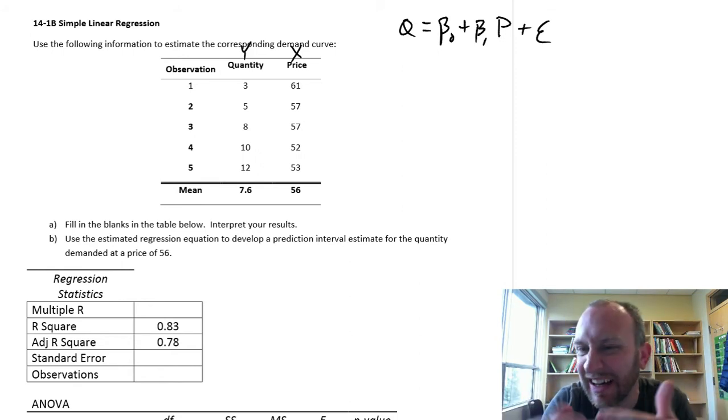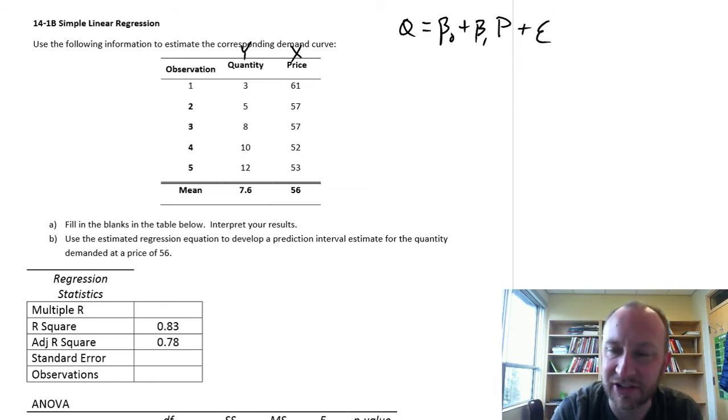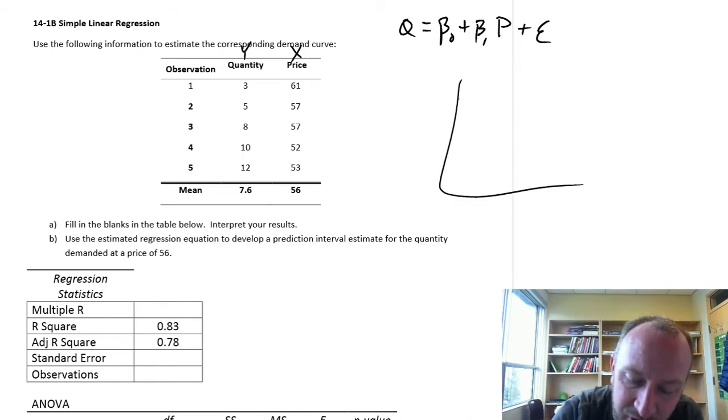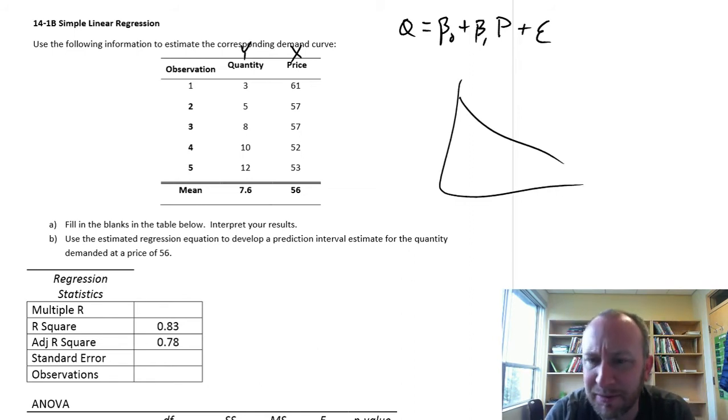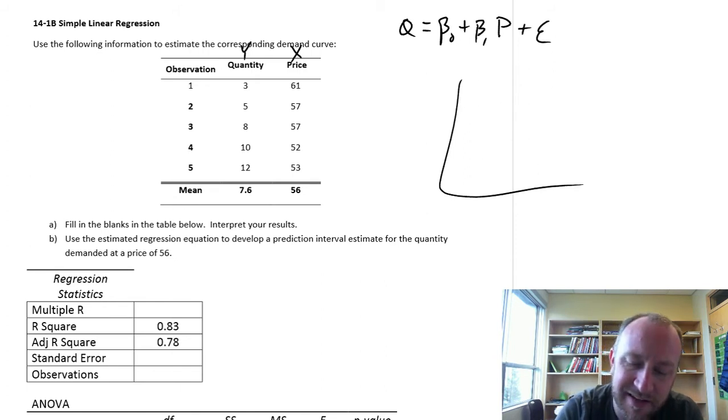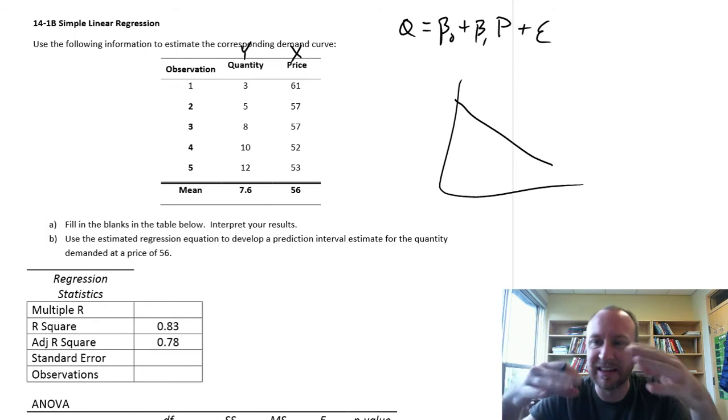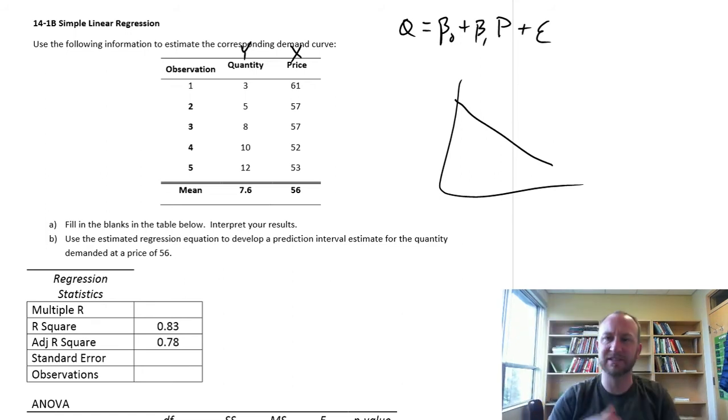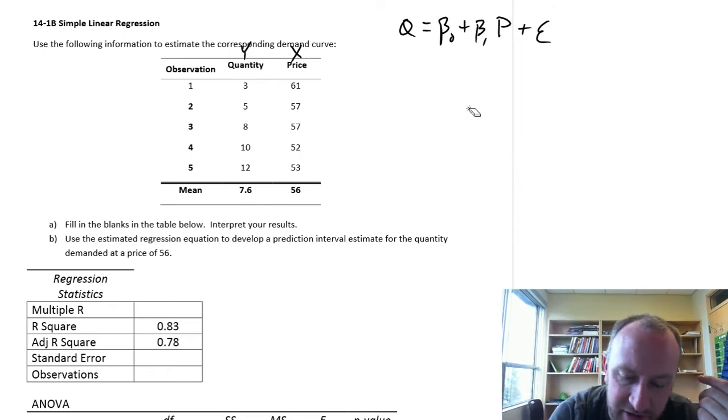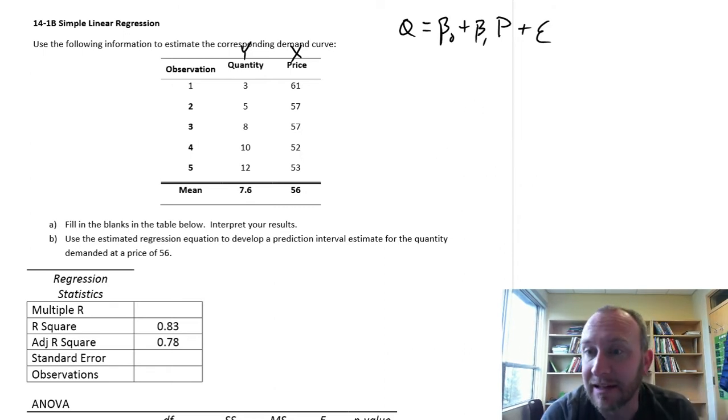Of course there's some noise. This might contradict what you've seen in textbooks, because when we draw demand curves, they usually look better. You don't see the random noise because these are glorified for textbooks, especially at the introductory level. But in reality, it's not a perfect linear relationship. There's some random noise around that relationship.